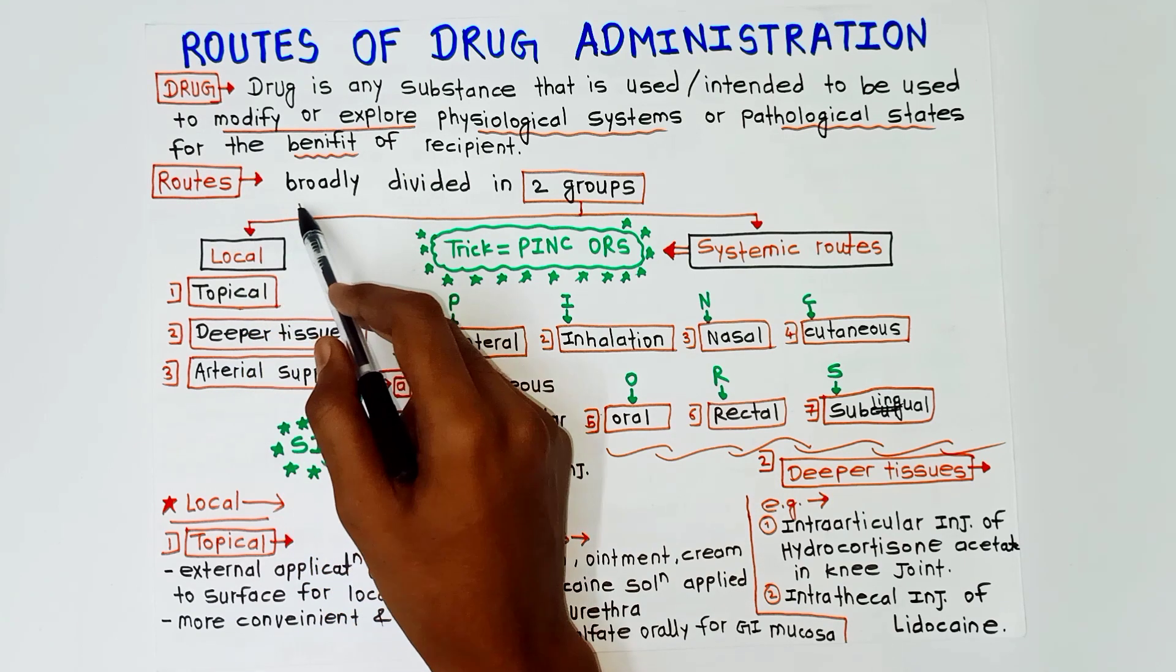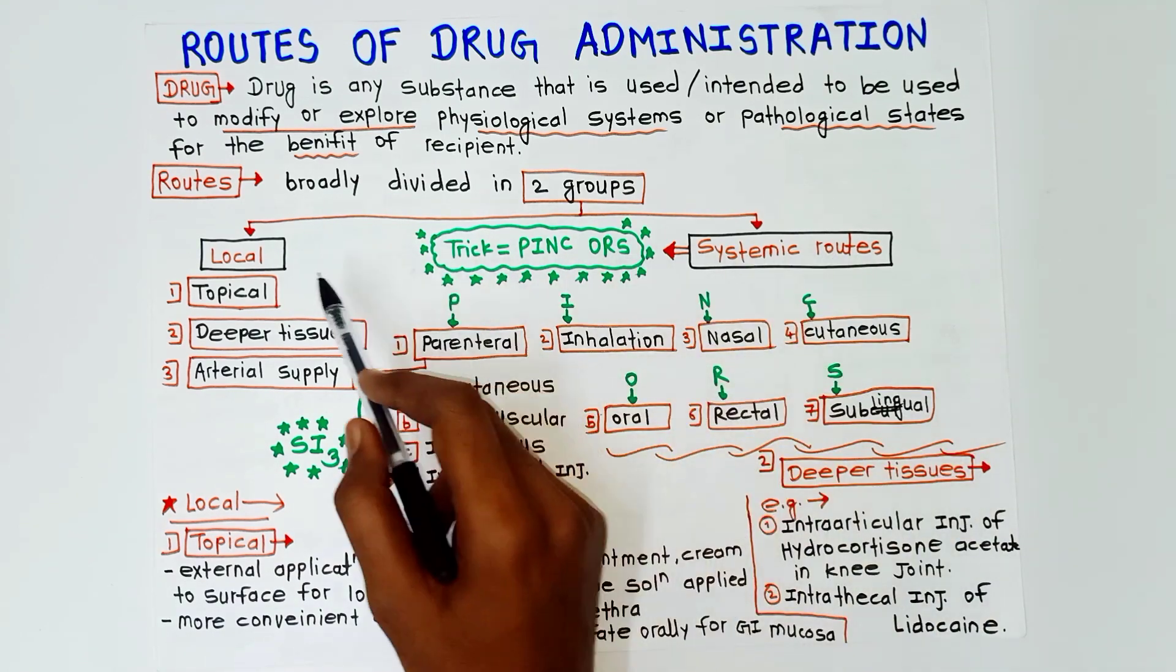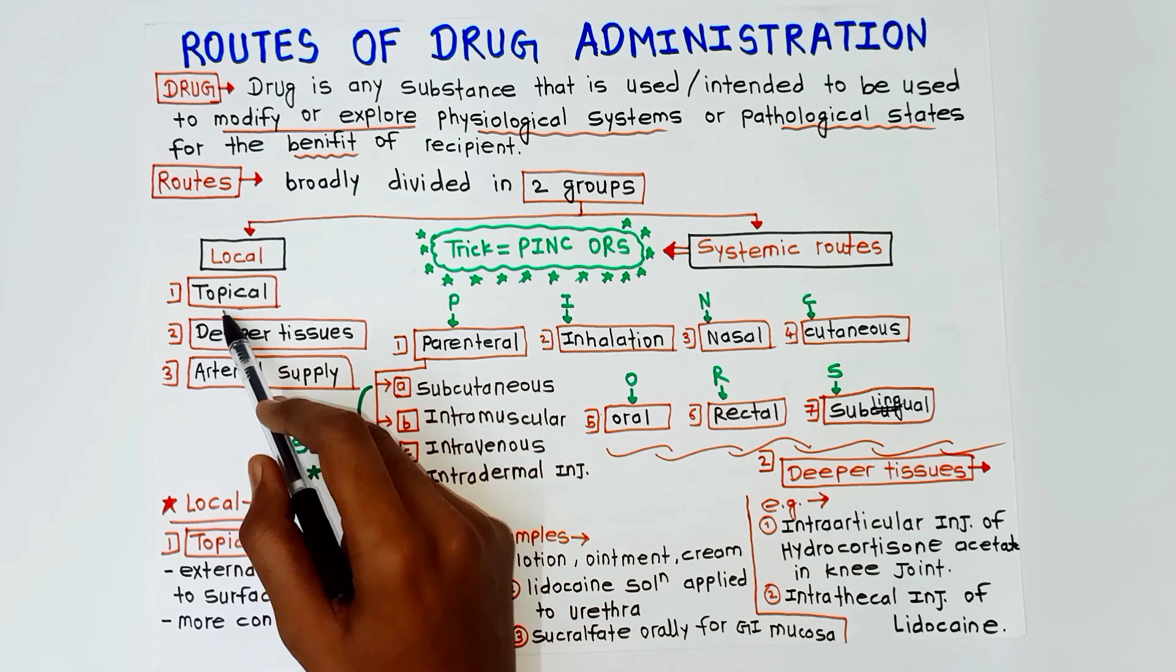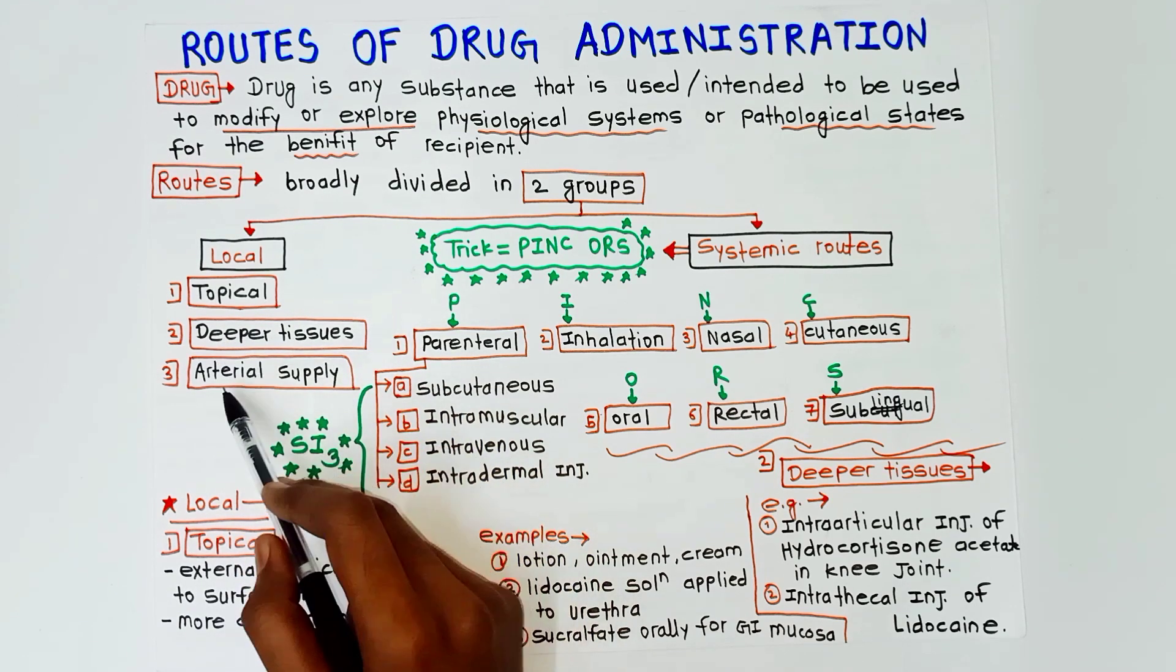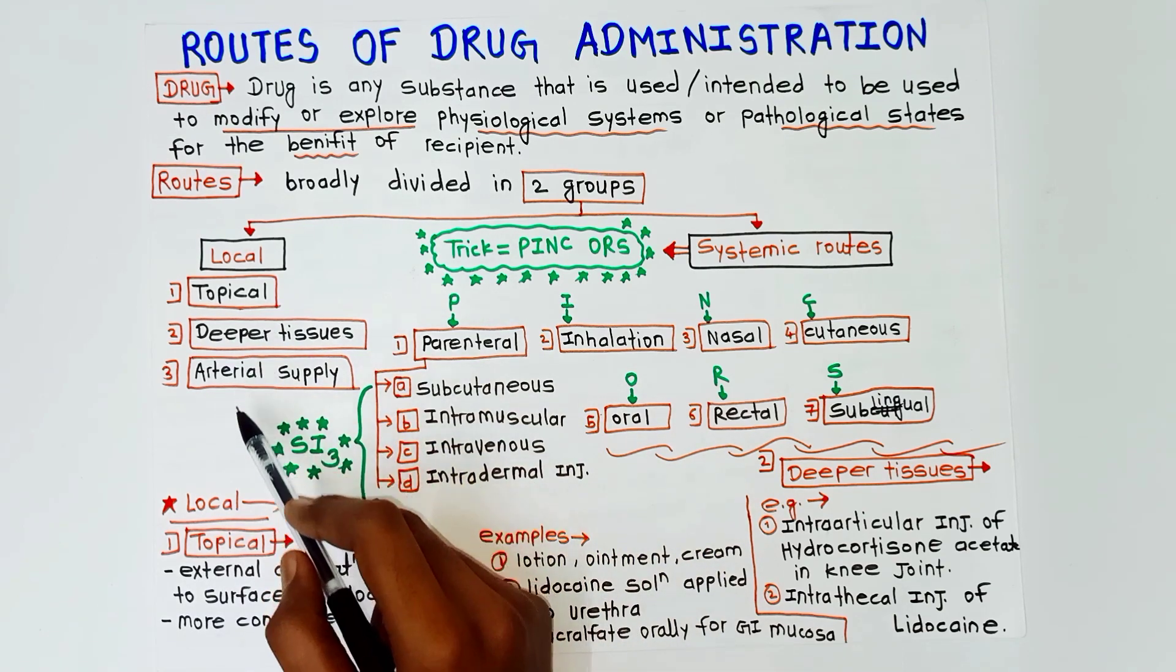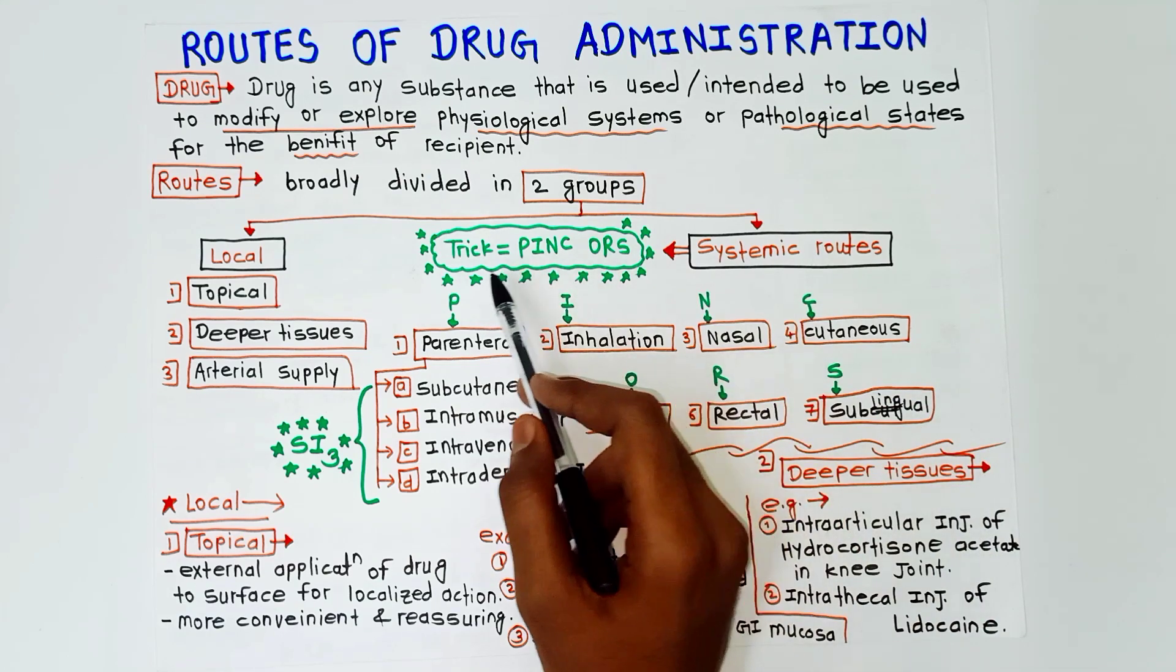Now we will learn the routes of drug administration. They are broadly divided into two groups: local and systemic routes. First of all, local routes - there are three local routes: topical, deeper tissues, and arterial supply.